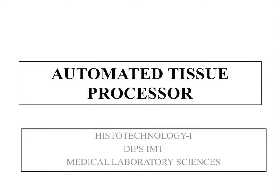We have discussed manual processing — how we do manual processing, how we perform, how we do labor. The automated tissue processor is an instrument that we use to process tissue. It will give us fewer problems during tissue processing. A human can make mistakes and exceed the time of tissue processing, but the machine will not do it. If the machine needs to put tissue in the next reagent, that will be performed at the correct time only.